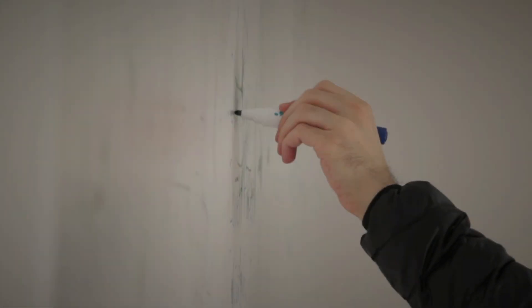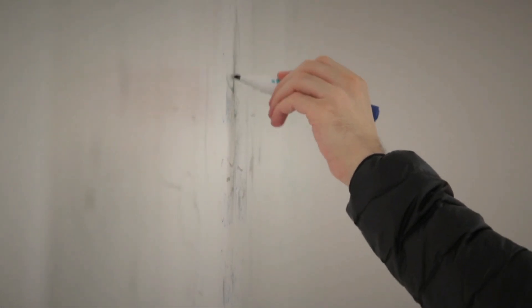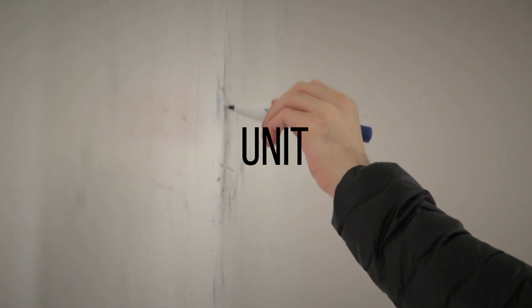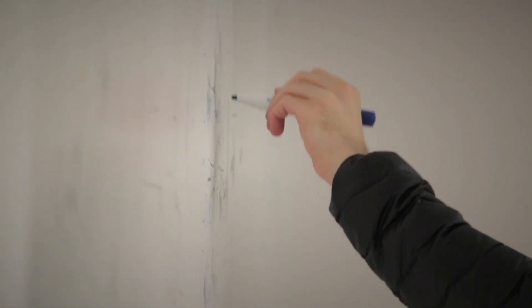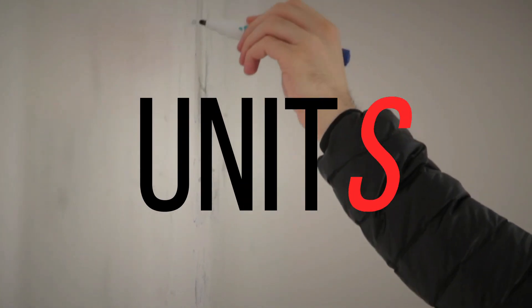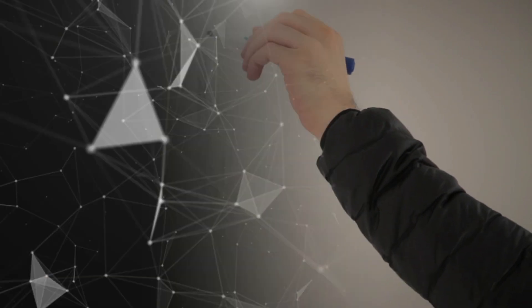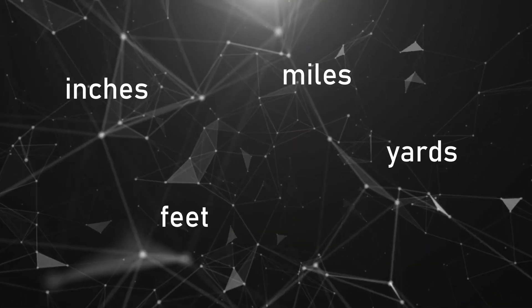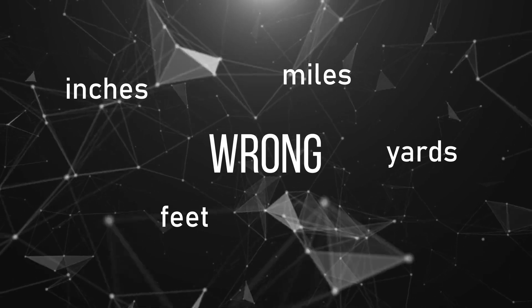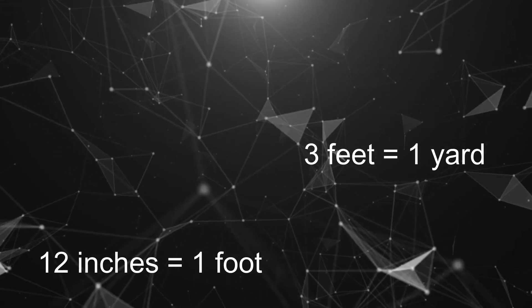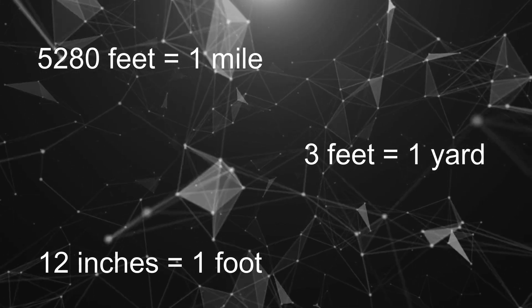Now onto my main argument. The imperial system is very confusing. Let's look at the unit- oh wait, did I just say unit? I meant units of length in the imperial scale. You have inches, feet, yards, and miles. Seems simple enough. Wrong. You then must remember that there are 12 inches in a foot, 3 feet in a yard, and 5,280 feet in a mile.